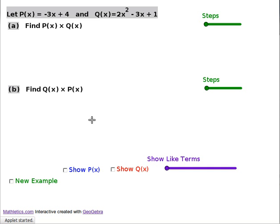When you're multiplying polynomials, it basically ends up being an expansion. So the first step is to write down P and Q. I've got P in the blue, minus 3x plus 4, and Q in the red, 2x squared minus 3x plus 1.